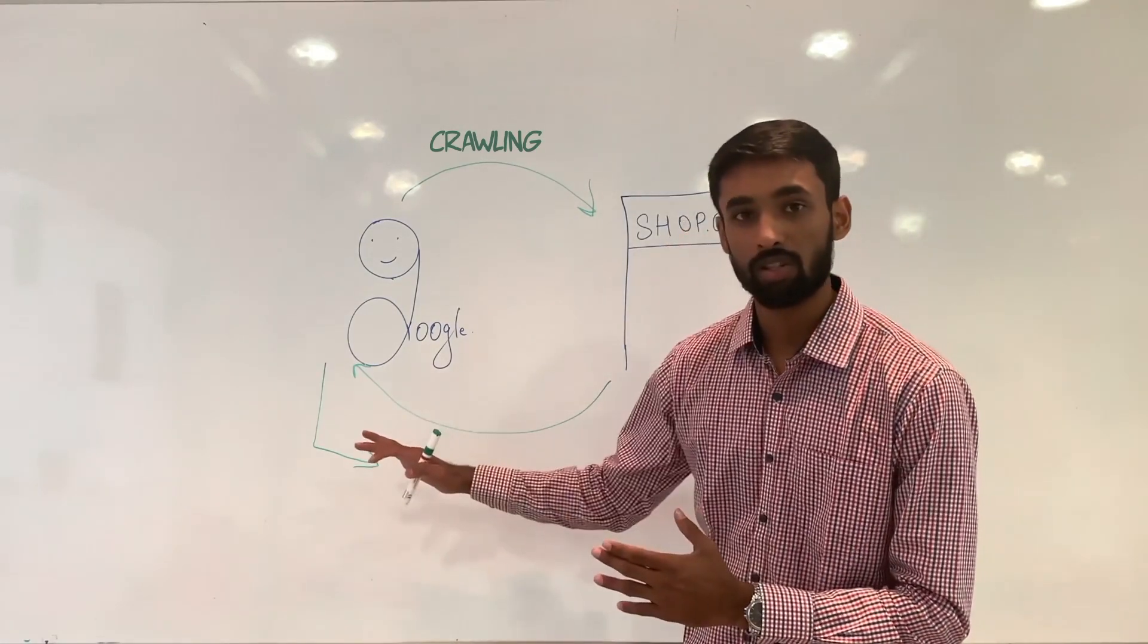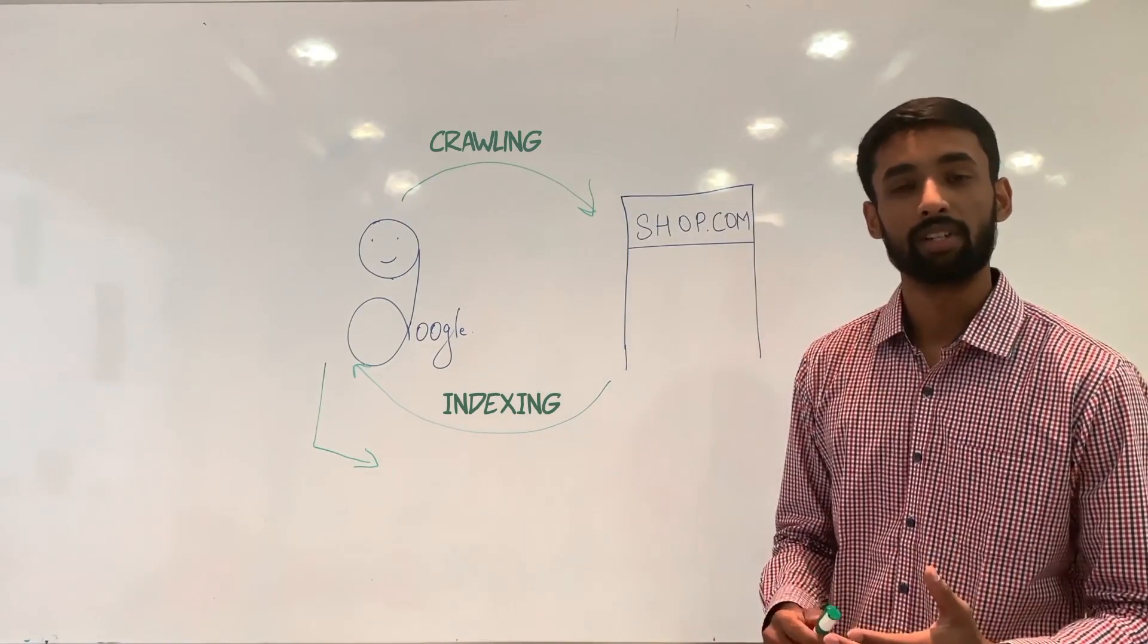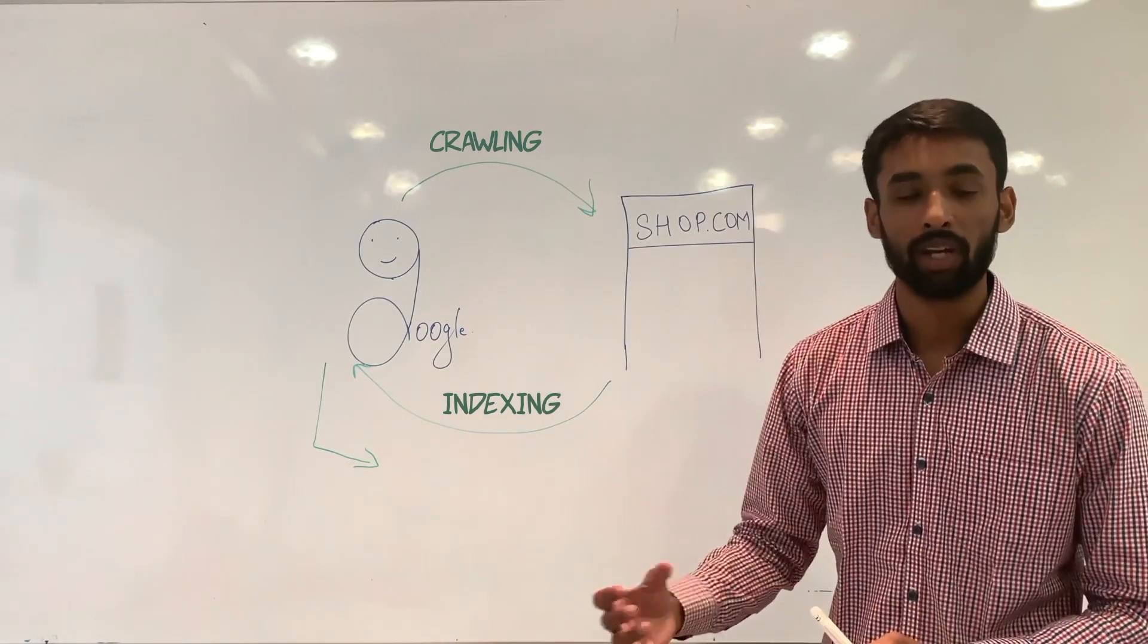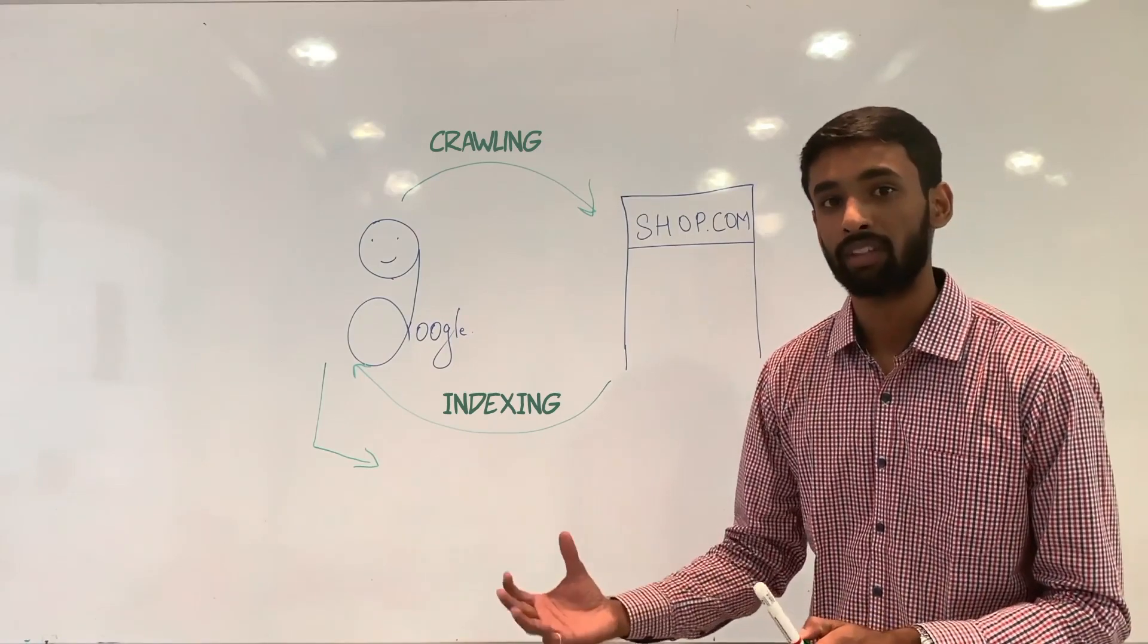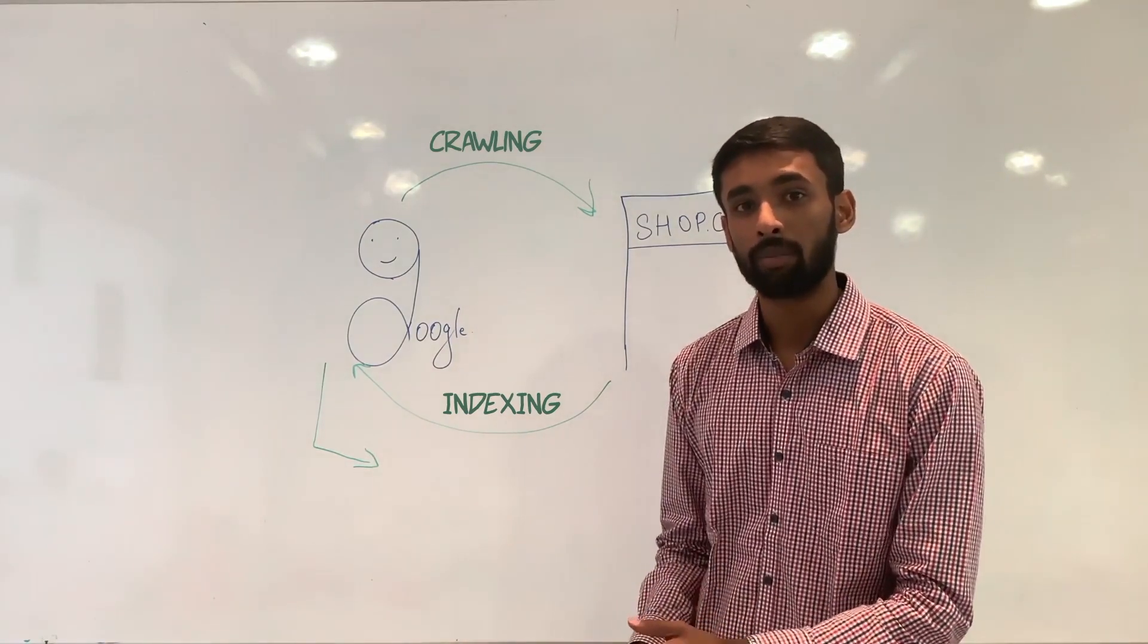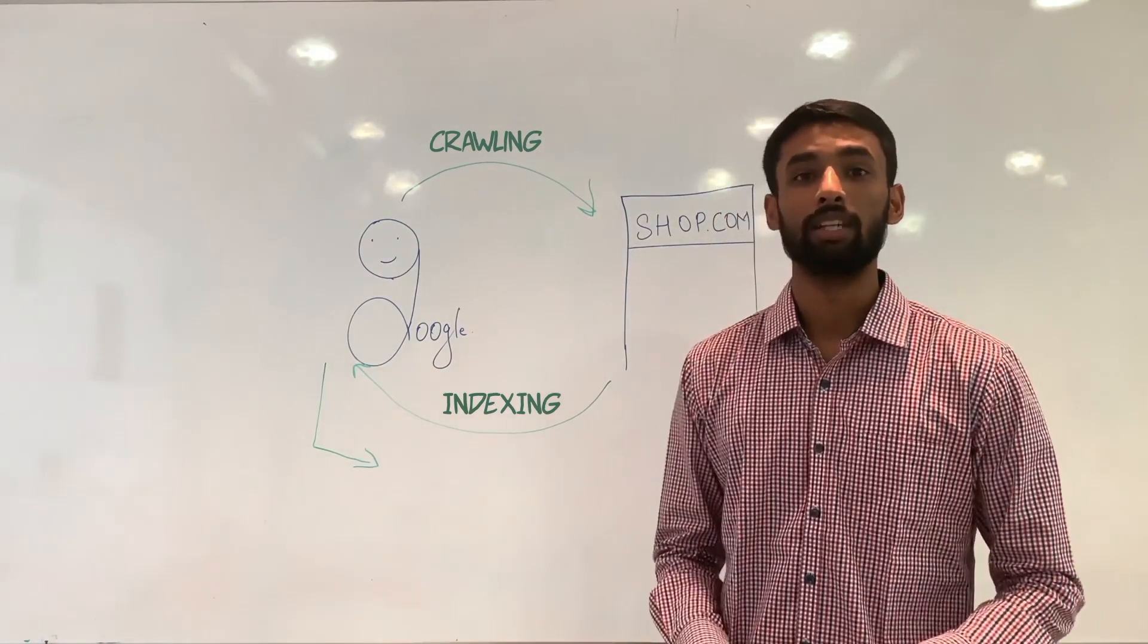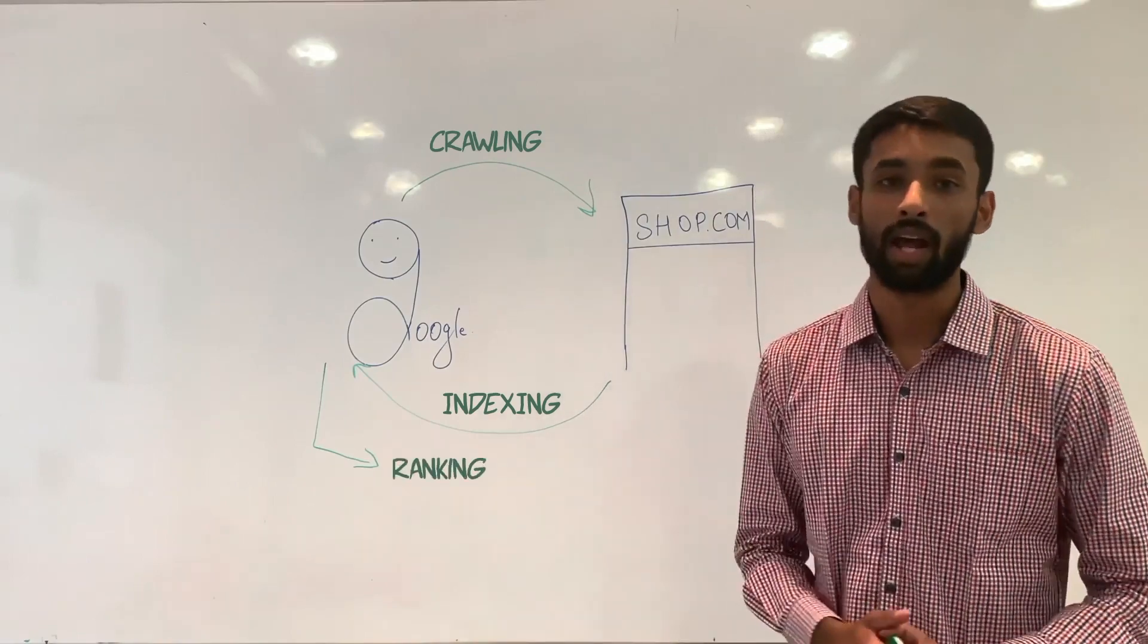This process is called indexing. So now, once the information has been indexed, based on the search query or once a person makes a search on the search engine, the search engine, based on several parameters, fetches those results and ranks them on the search engine results page. This is called ranking.